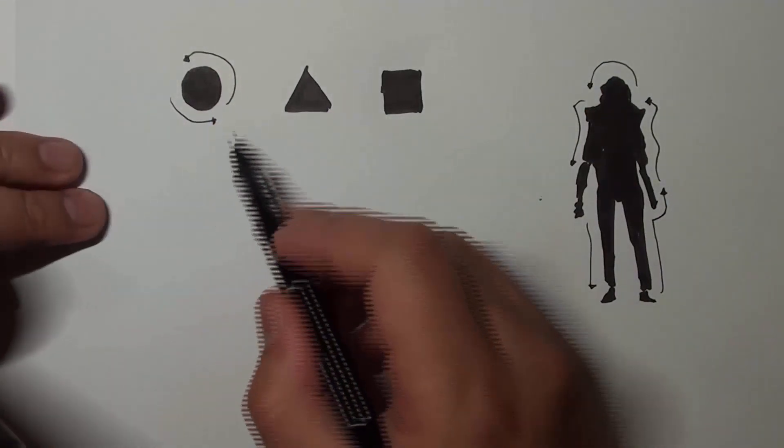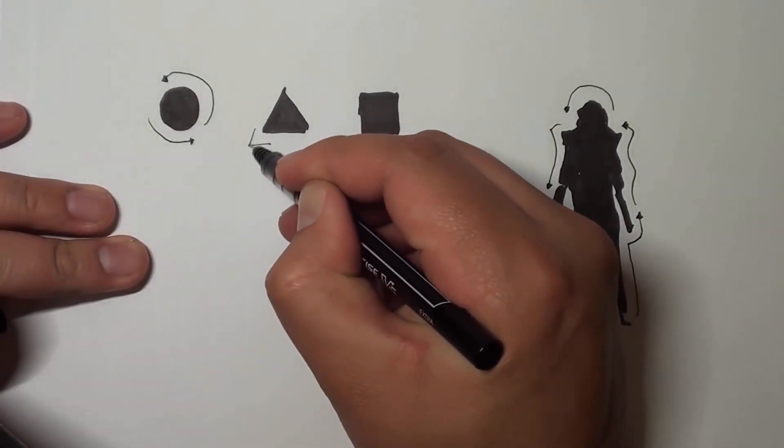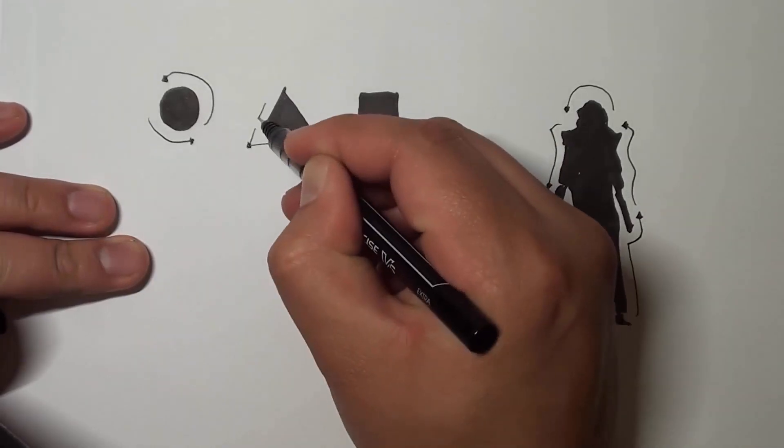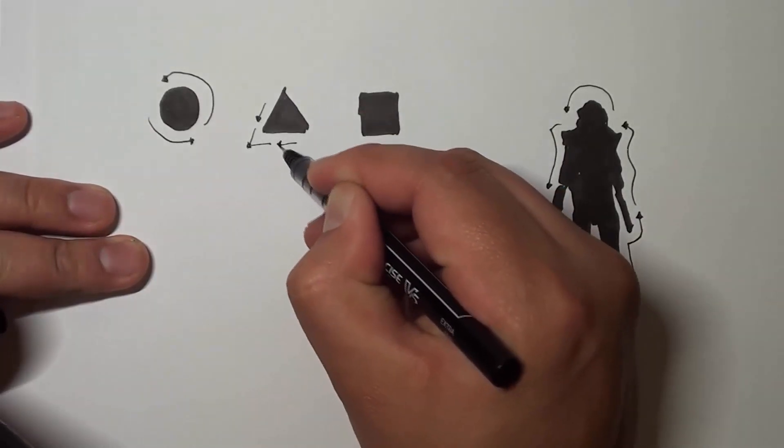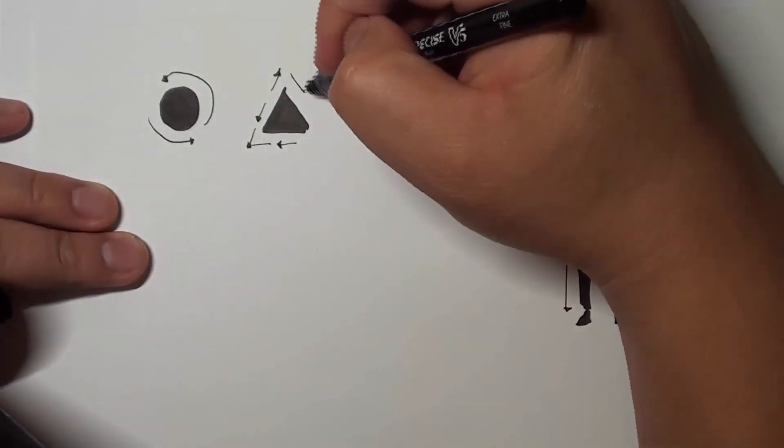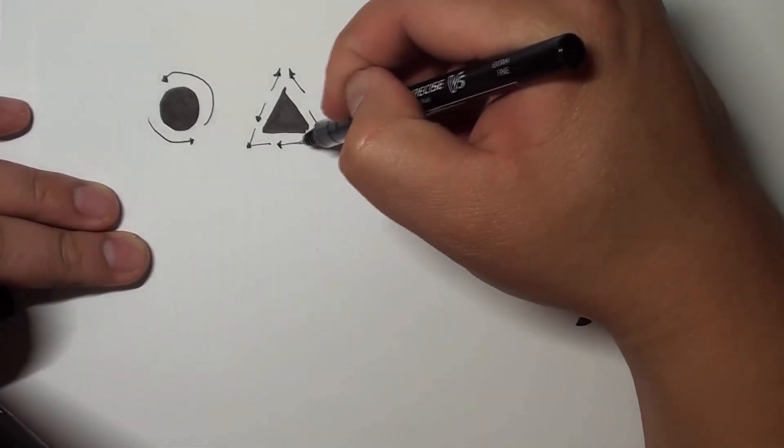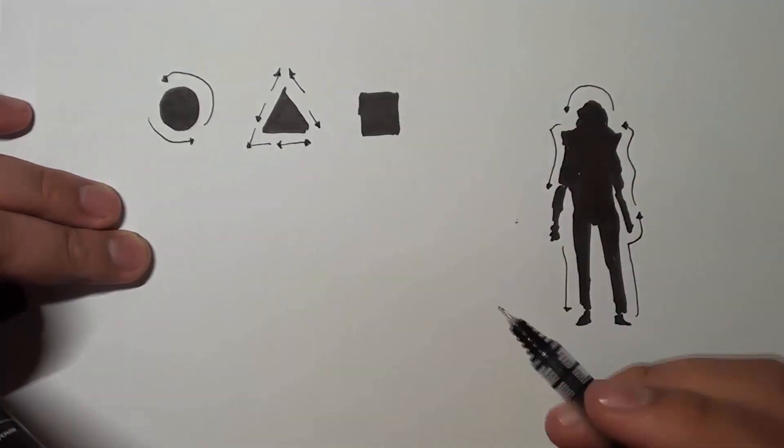When we look at a triangle, a triangle is generally very sharp, right? It always comes to a point. So you can imagine that when we're designing and we want something to look very aggressive, I'm most likely going to utilize a triangle to convey that kind of design language.